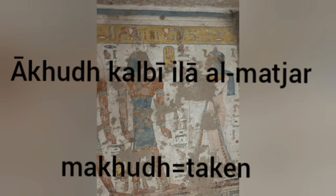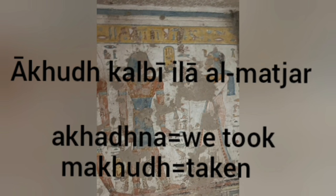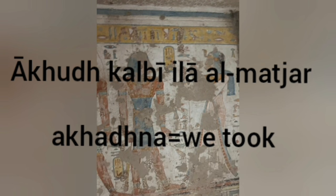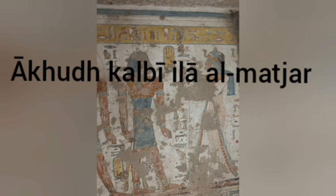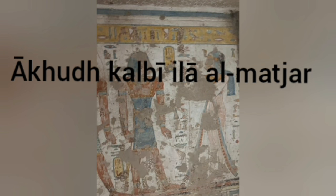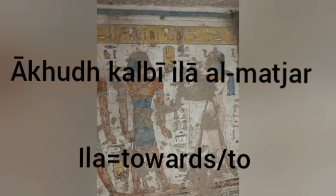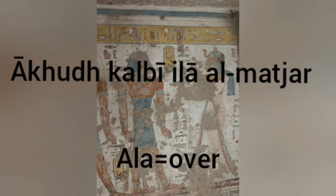For example, you could say 'makhut,' which means 'taken' instead of 'took.' Then you have 'kalbi' — 'kalb' means 'dog,' and with this 'i,' it means 'my dog.' The word 'ilah' is prefixed with this 'i,' with 'lah' being the root word. The 'a' is also kind of a suffix, but that's too deep to go into. 'Allah' would mean 'on top of,' whereas 'ilah' means 'to' or 'towards something.' So just changing one letter changes the entire meaning of the word.